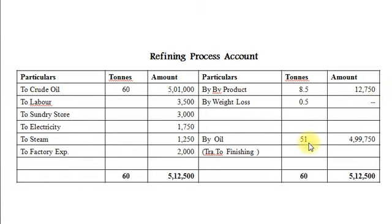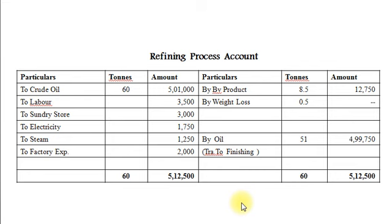The cost of finished product at the end of the refining process: Rs. 4,99,750, calculated as Rs. 5,12,500 minus Rs. 12,750. Per ton cost: Rs. 4,99,750 divided by 51 tons equals Rs. 9,799 per ton. Here our refining process account is complete.